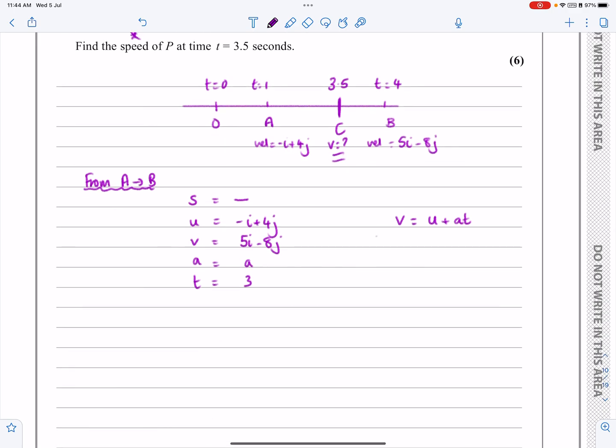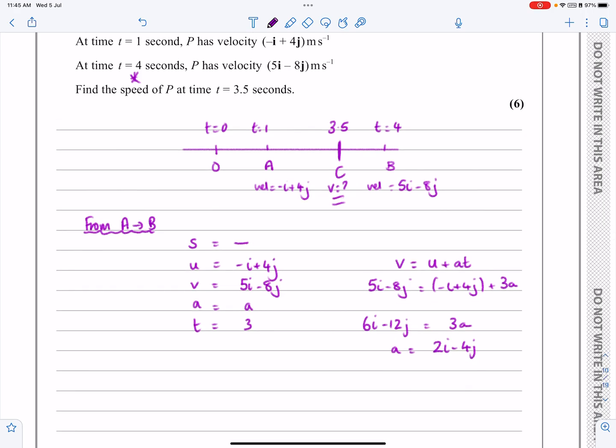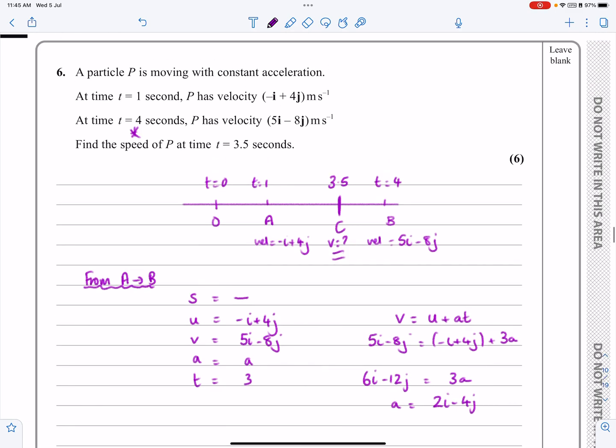Put all the information in. I've got 5i minus 8j equals minus i plus 4j plus three lots of A. Rearranging, taking this over to that side, I get 6i minus 12j equals 3A. That's nice and neat. Dividing everything by three, A works out to be 2i minus 4j. That gives me confidence it's right.